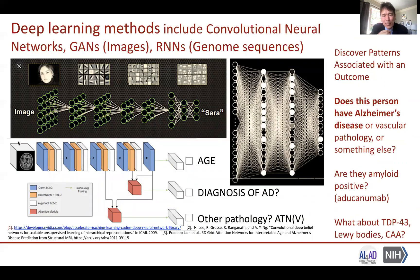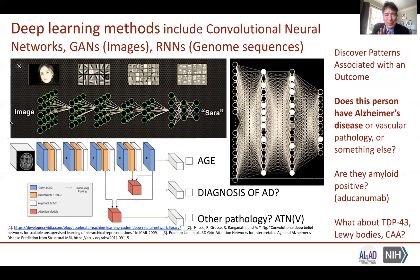One of the AI approaches becoming increasingly popular is deep learning. Examples include convolutional neural networks, generative adversarial networks used with images, and recurrent neural networks used with genome sequences. A neural network can be developed to identify a person based on distilling certain features from images and deciding based on lots of examples. When we apply this to neuroimaging, we use the same principle in three dimensions to extract successively more refined features to make predictions of diagnosis — predicting age to check if the method works, or in more complex examples, subtyping pathology such as subtypes of dementia.